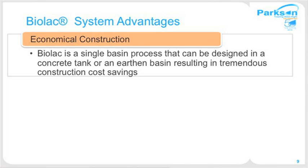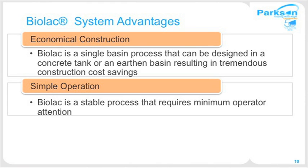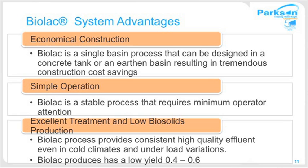What really differentiates the BioLac process versus other activated sludge technologies is that it's a single basin process, so it's economical to construct. BioLac can be installed in concrete basins like most activated sludge processes, but a lot of BioLac installations are in earthen basins — a tremendous cost saving with minimal civil work and concrete needed. It's a very simple operation, providing peace of mind for the operator, excellent and consistent effluent quality, and low biosolids production — a real cost-saving advantage for the wastewater plant.